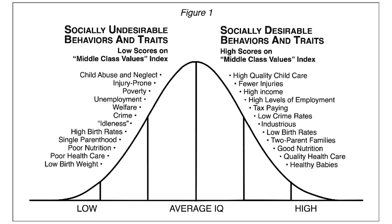High IQ correlates with fewer injuries and higher income. Low IQ correlates with being injury prone, poverty, unemployment, and welfare. There is nothing negative about having high IQ — lower crime rate, being more industrious, better nutrition. You eat better. There's really nothing negative there. Education: you get higher grades. You have more options in life because there are more educations you can take, and it's easier to do the tests.